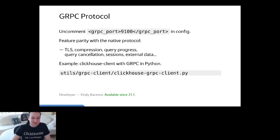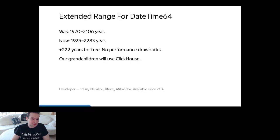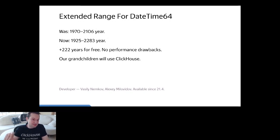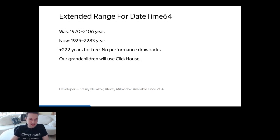We have extended the range of supported values for the DateTime64 data type. Previously it ranged only from the beginning of the Unix epoch to the year 2106. But what if you want to store your grandfather's birthday, or the maturity date of a mortgage where the range until 2100 is not enough? Now you have 222 years more for free, without any performance drawbacks, up to 2283. I hope our grandchildren will be able to use ClickHouse.